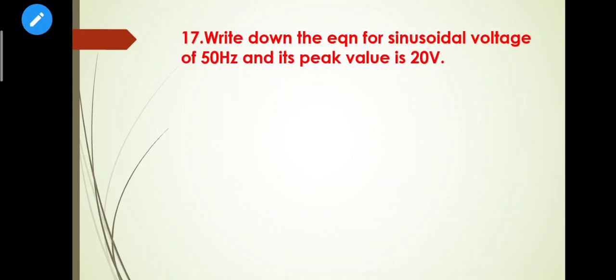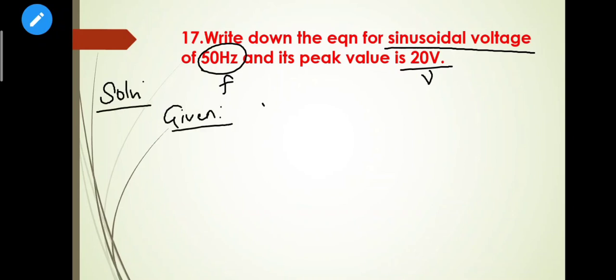Next question: Write down the equation for a sinusoidal voltage of 50 Hz frequency and its peak value is 20V. Solution - Given: frequency f = 50 Hz, and the peak value Vm = 20V. Find the instantaneous voltage equation.